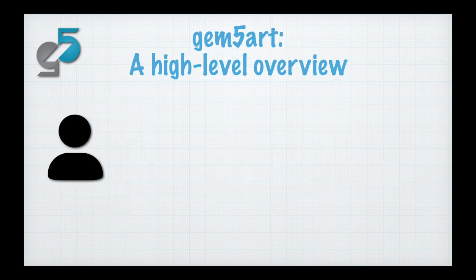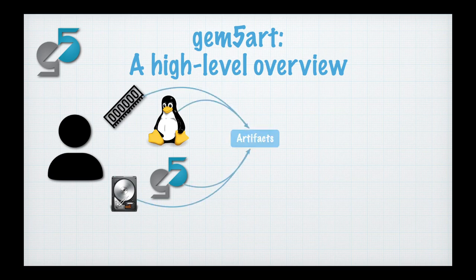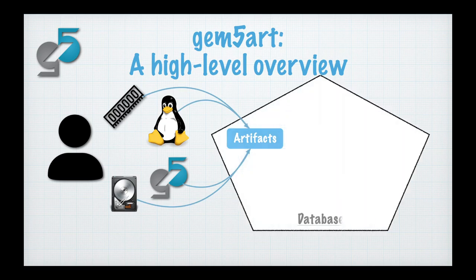As a high-level overview of GEM5 Art, a user will start with everything they need for a particular run of GEM5, such as a system configuration, a Linux kernel, a GEM5 binary, and a disk image. To interact with GEM5 Art, they first register all these inputs as artifacts inside a MongoDB database. An artifact in the database would be, for instance, the Linux kernel, which would specify what versions were used and where it was obtained.